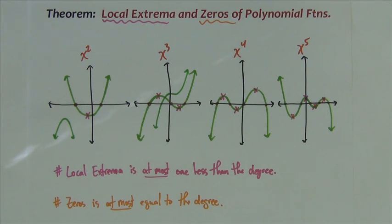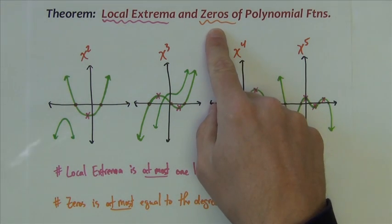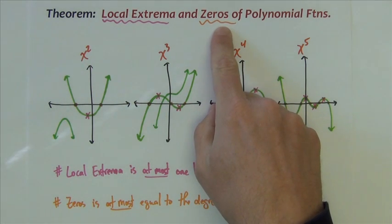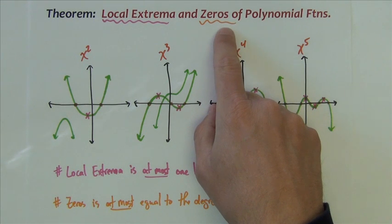So that's the two theorems about extrema and zeros summarized. Now we're going to finish this lesson by looking primarily at zeros of polynomial functions and how to find them. The next couple of lessons after this one focus mainly on finding zeros of polynomial functions — that'll be the main theme going forward in the rest of this chapter.